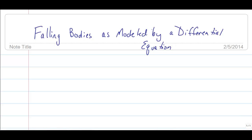I want to start off the lecture by talking about falling bodies as modeled by a differential equation. We're going to take a mass m. If we drop a mass m, there are two forces acting on it. First, there's the force due to gravity pulling the mass down — mass times the gravitational constant, the acceleration due to gravity.